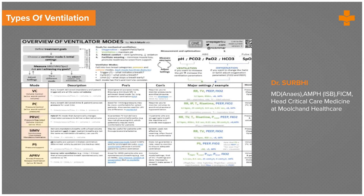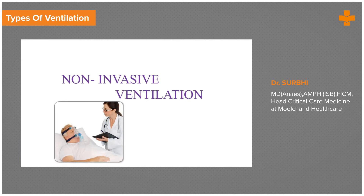There are two aspects of ventilation to monitor. One is the ventilation aspect and one is the oxygenation aspect. When reviewing the ABG, the pH and the PCO2 give you an idea of ventilation, while the PO2, SpO2, and bicarbonate give you an idea of oxygenation.